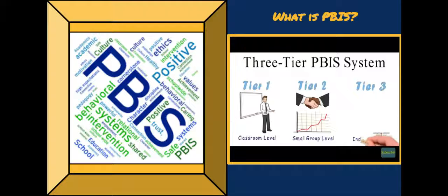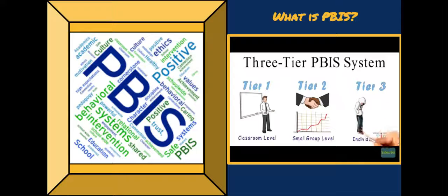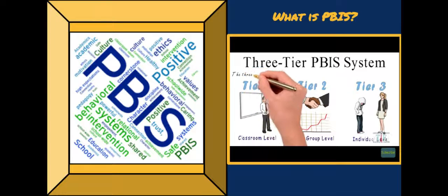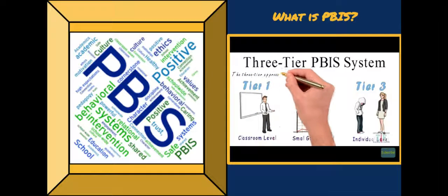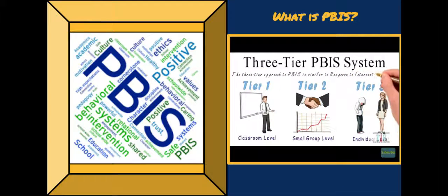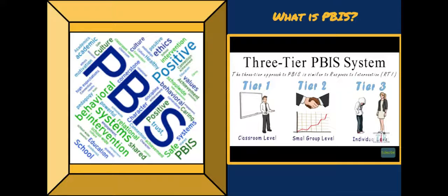Tier three provides support at the individual level. These students require individualized attention with mentoring, FBAs, ABC charts, counseling services, and many different types of services. PBIS is very similar to a Response to Intervention, or RTI.